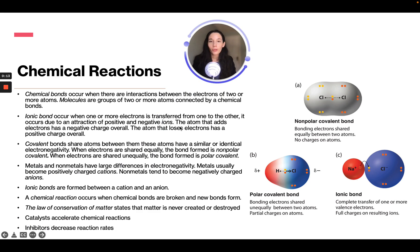Chemical bonds occur when there's an interaction between electrons of two or more atoms, and molecules are groups of two or more atoms connected by chemical bonds. Ionic bonds occur when one or more electrons is transferred from one to the other. It occurs due to an attraction of positive and negative ions. The atom that adds electrons has a negative charge overall, and the atom that loses electrons has a positive charge overall.